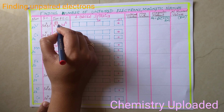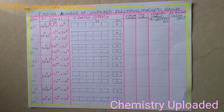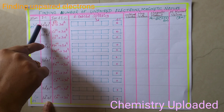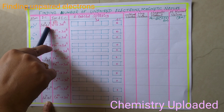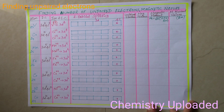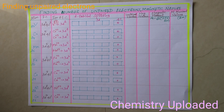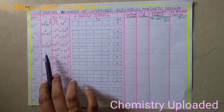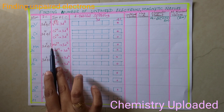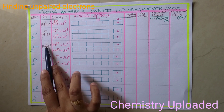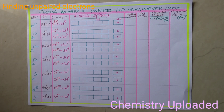Vanadium 3+ means 3 electrons are removed from the vanadium atom. From the electronic configuration of vanadium, removing 3 electrons means 2 electrons from 4s and 1 electron from 3d, leaving only 2 electrons in 3d. For chromium 2+, 2 electrons are removed to give 3d4. Chromium 3+ gives 3d3. For Mn2+, the last 2 electrons go first, giving 3d5. Mn3+ removes one more from the d orbital, giving 3d4.